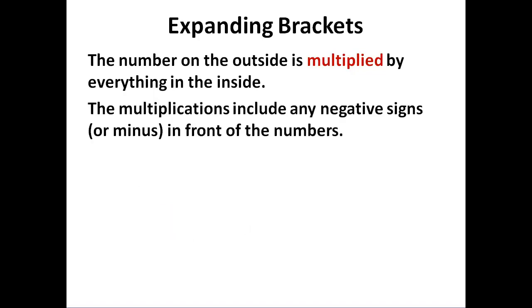Any negative sign or minus in front of a number stays with that number. So in this case we multiply 2 by x and 2 by minus 5. We get 2x plus minus 10, which is 2 times minus 5. We can write that as 2x minus 10 if we prefer.